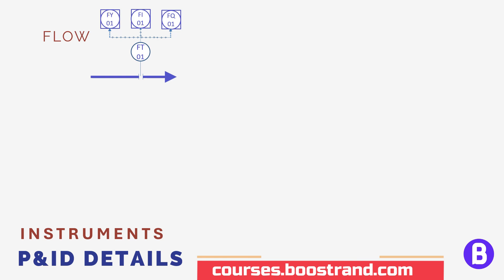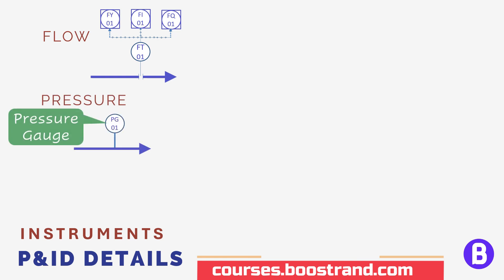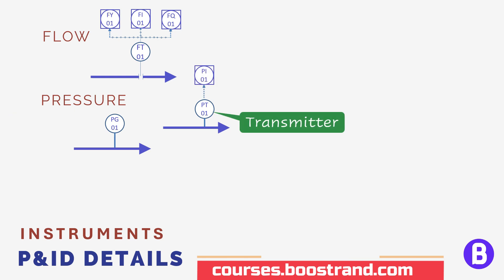Through instruments, we can also monitor the pressure, whether this is from the field based on a pressure gauge reading, or to send the reading to the DCS to be read from the control room with an alarm so that when the pressure goes too high or too low, or even use it as a control parameter to set pressure to a predetermined value.